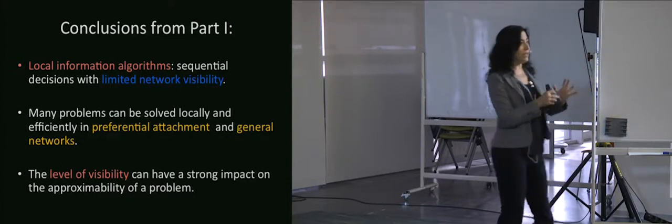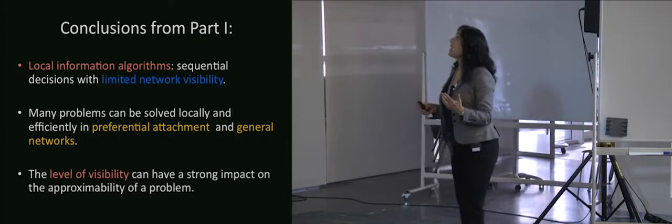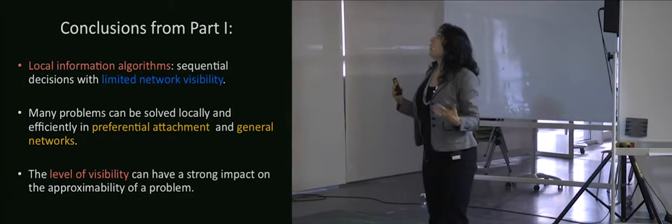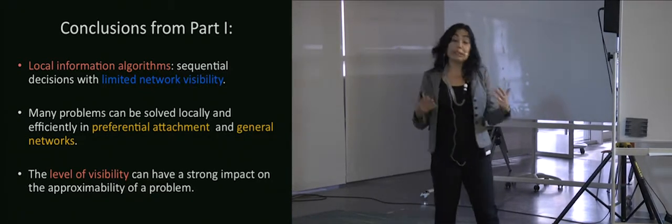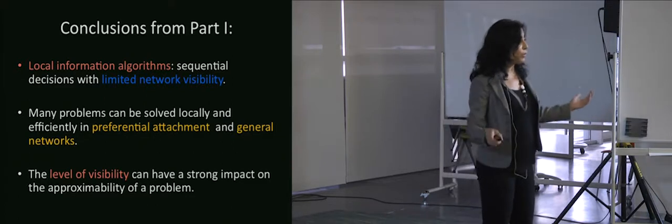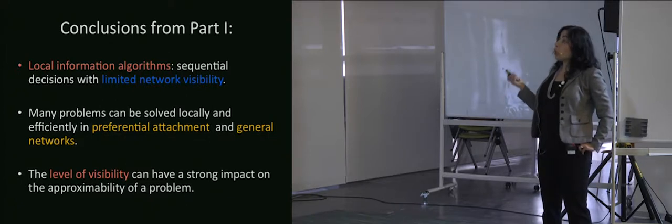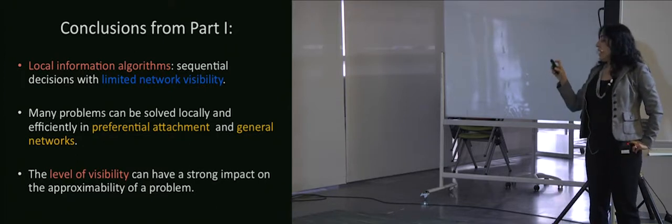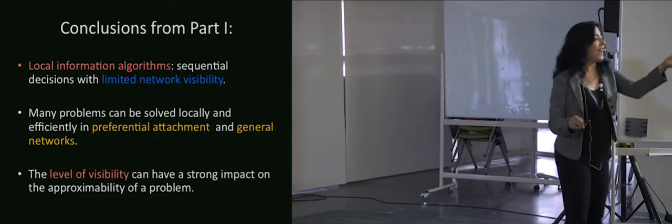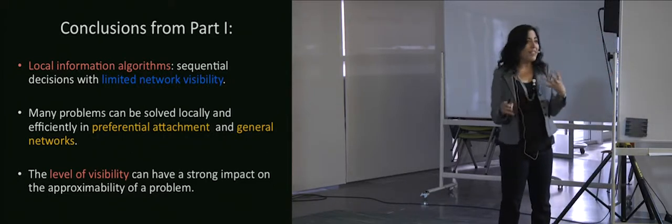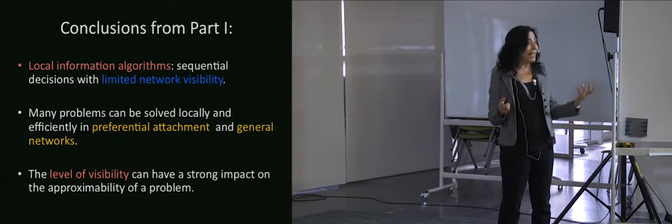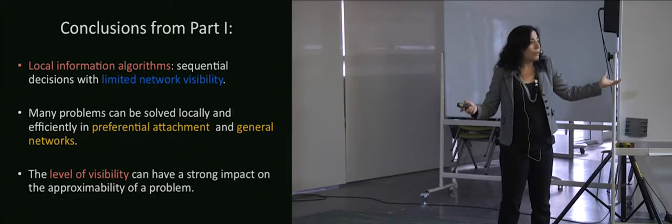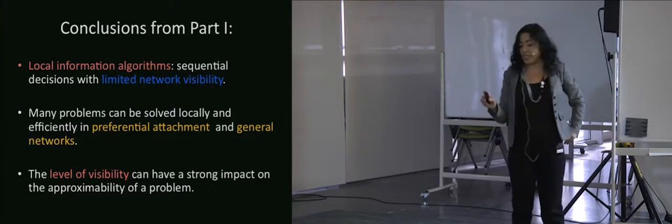Conclusions from part one on local access algorithms: I gave a definition of a local access algorithm as a sequential decision process with limited network visibility, possibly adding some uniformly random steps. Many problems can be solved locally and efficiently in preferential attachment graphs and in general graphs. And as we saw in finding the root, there's a huge difference from what seems a minor design choice — whether an algorithm is one-local or not — which can make a really big difference in runtime.